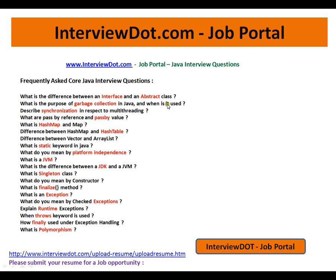First: the difference between interface and abstract class — very important. Garbage collection: you should know how exactly garbage collection works inside the JVM, whether we can enforce it or not, what benefit we get, and how it avoids out-of-memory errors. Synchronization: whenever two threads call a single method, what happens, and how we can protect shared variables among two threads. Also, pass-by-reference and pass-by-value for objects and primitive types.